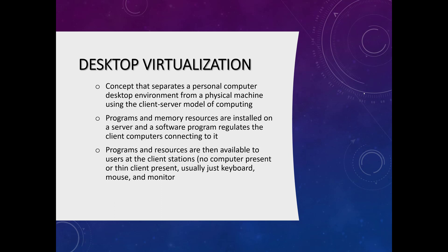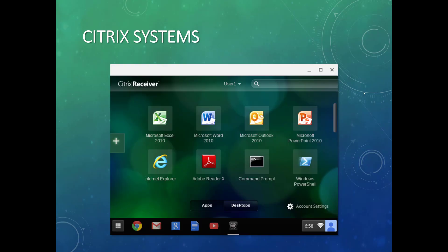Desktop virtualization separates a personal computer desktop environment from a physical machine using a client-server model. Memory and resources are installed on a server and a software program regulates the client or guest connecting to it. Citrix Systems is one example that pushes out apps like Microsoft Word, Outlook, Excel, and Internet Explorer to your desktop. You're using a thin client — something without much computing power that just contacts the server. It may be like a workstation in an assembly line.